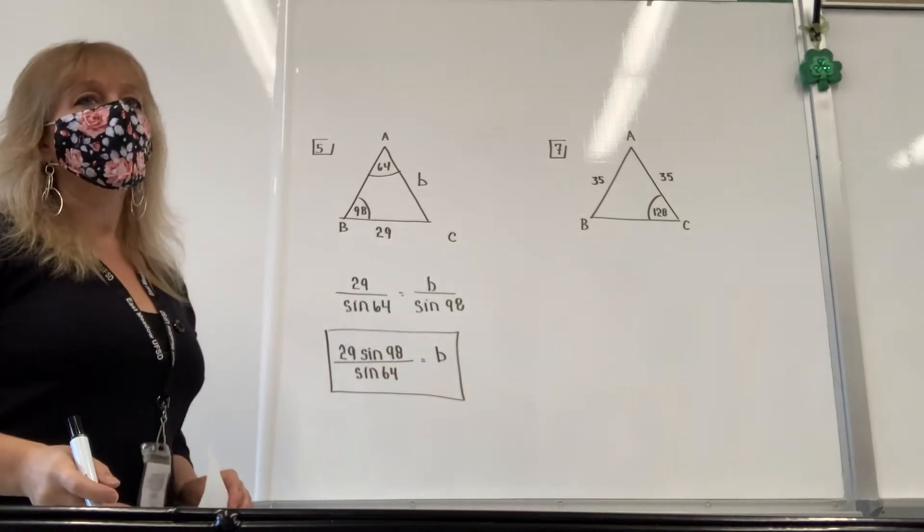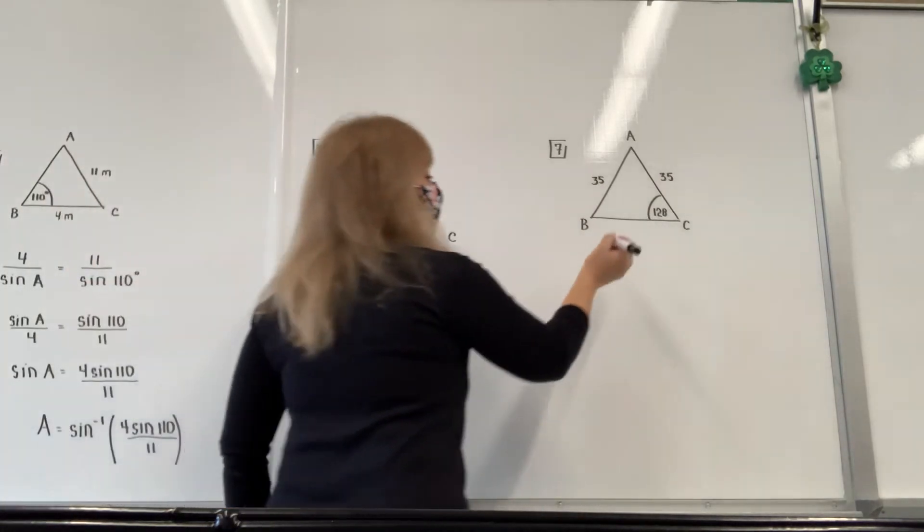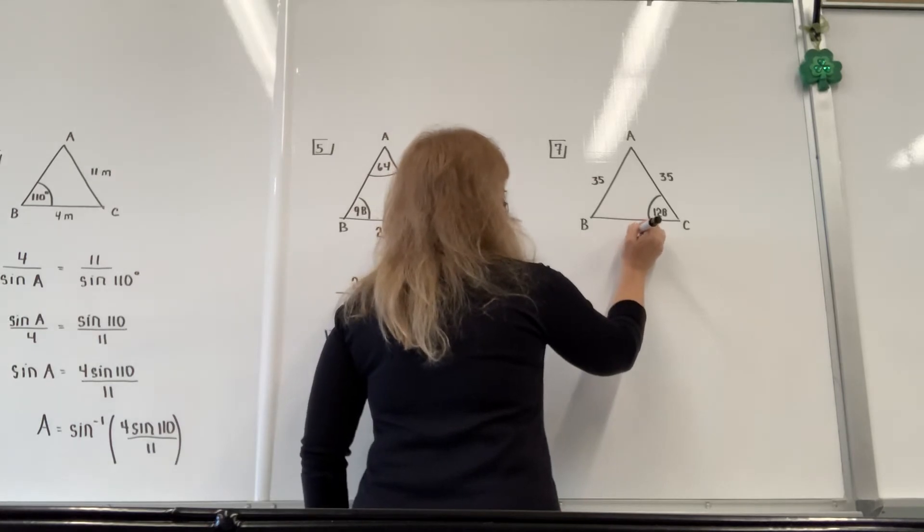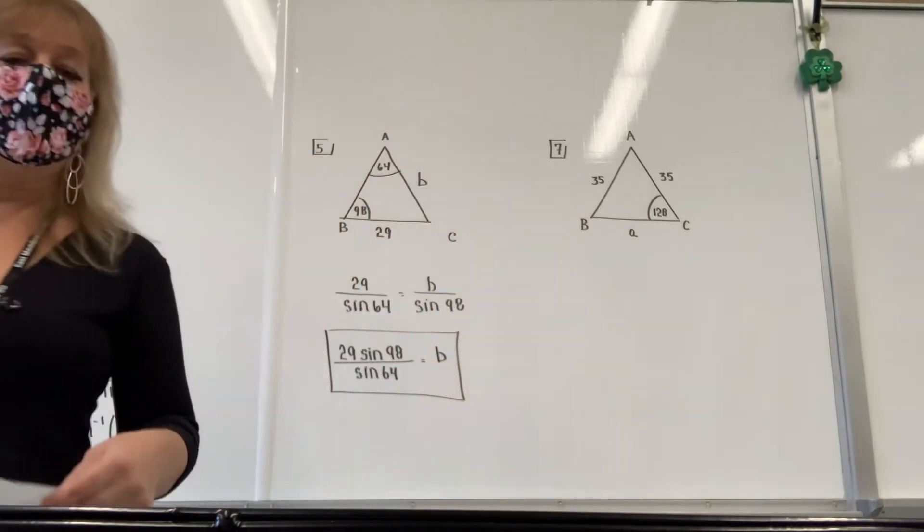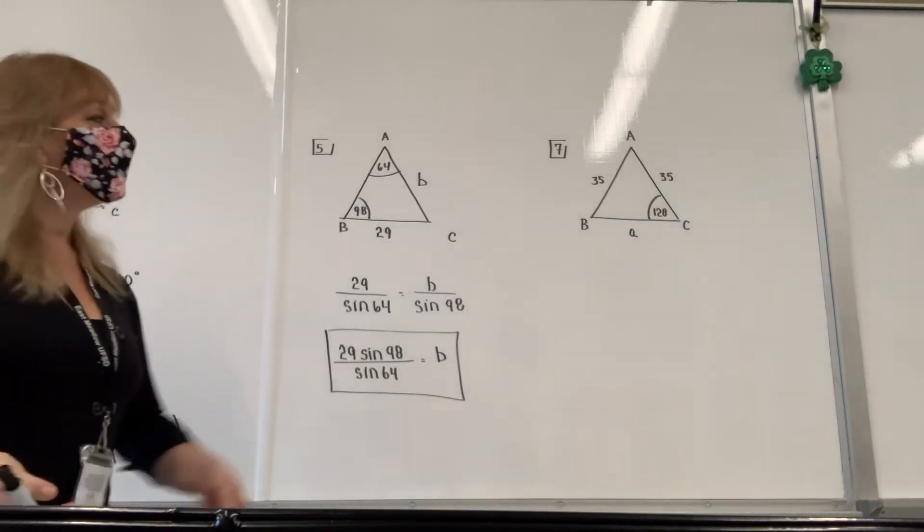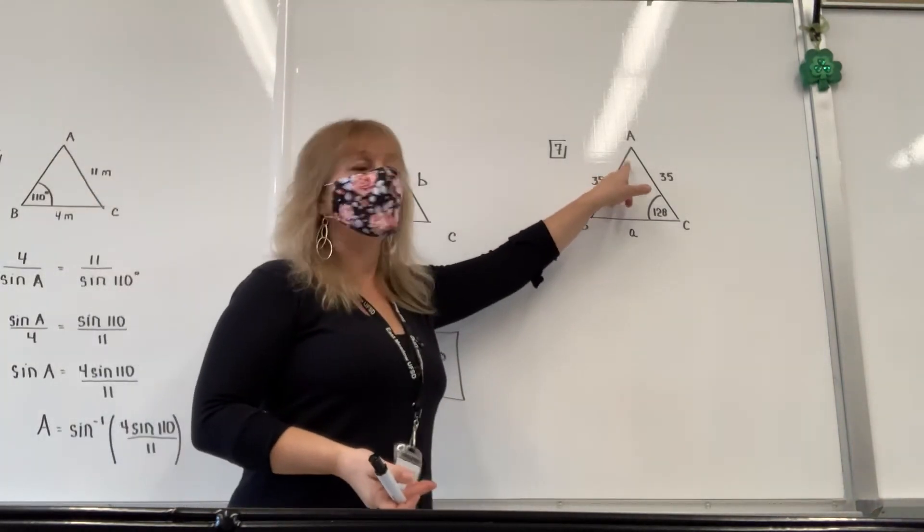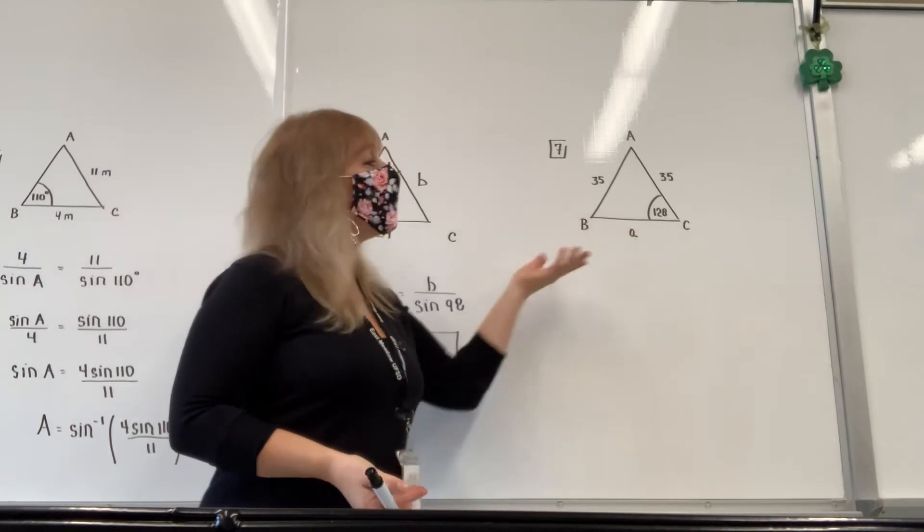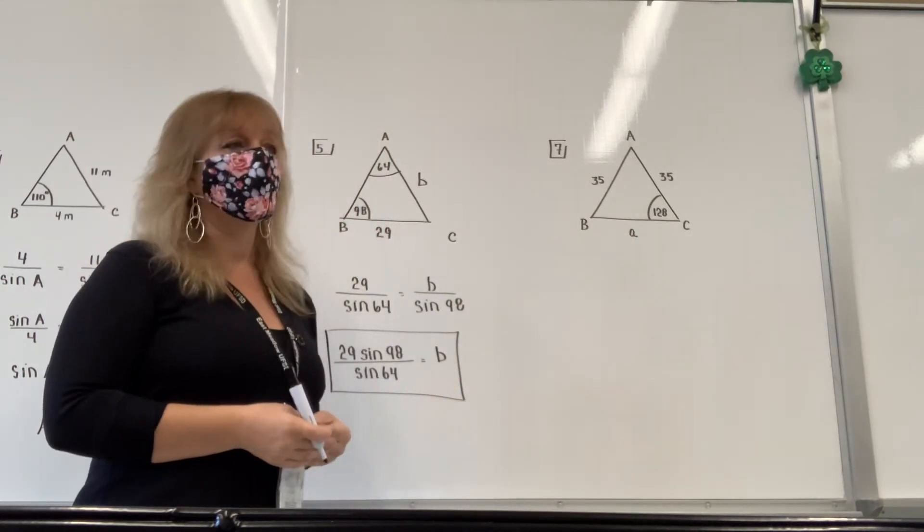But it says find the measure of angle A. I didn't mean that. It says find side A. That's what I meant to say. And you might say, well, if I try to do this, I'll have an issue. Because I don't know what capital A is. And I don't know what lowercase a is. But you should recognize it's an isosceles triangle. Which means I had to have written something wrong.